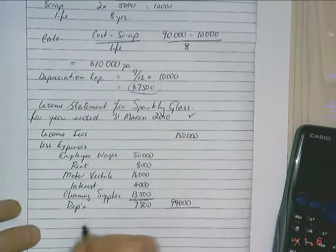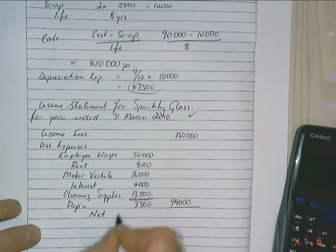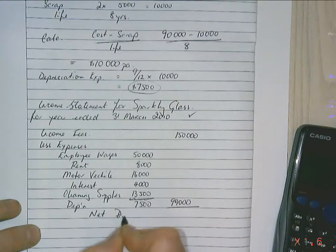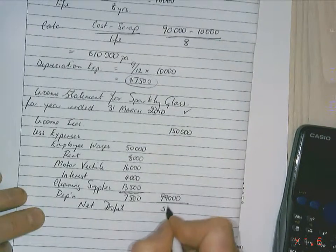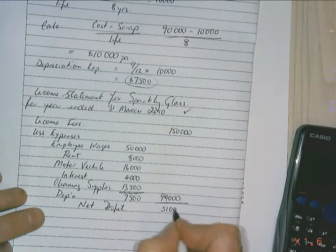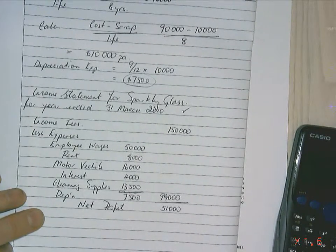Therefore, net profit is $150,000 minus $99,000, which equals $51,000. And that completes the income statement.